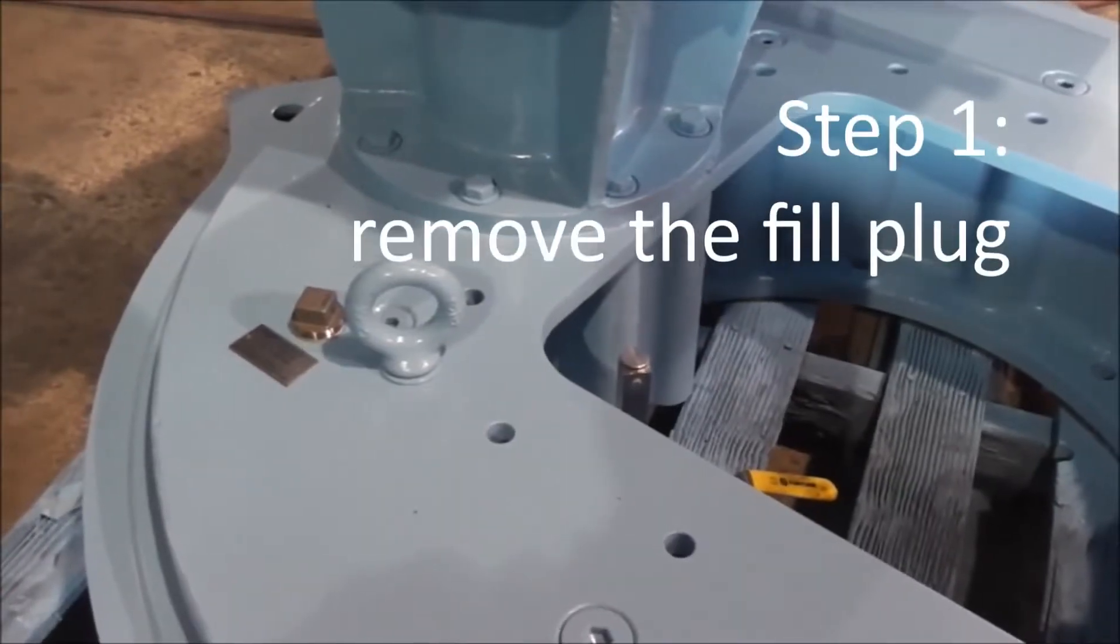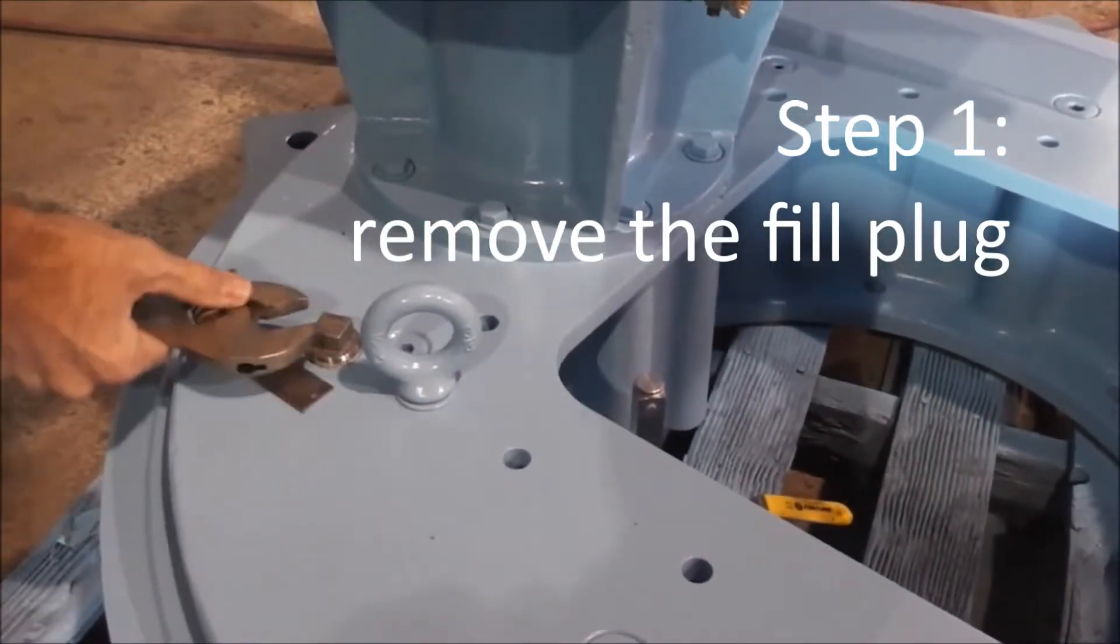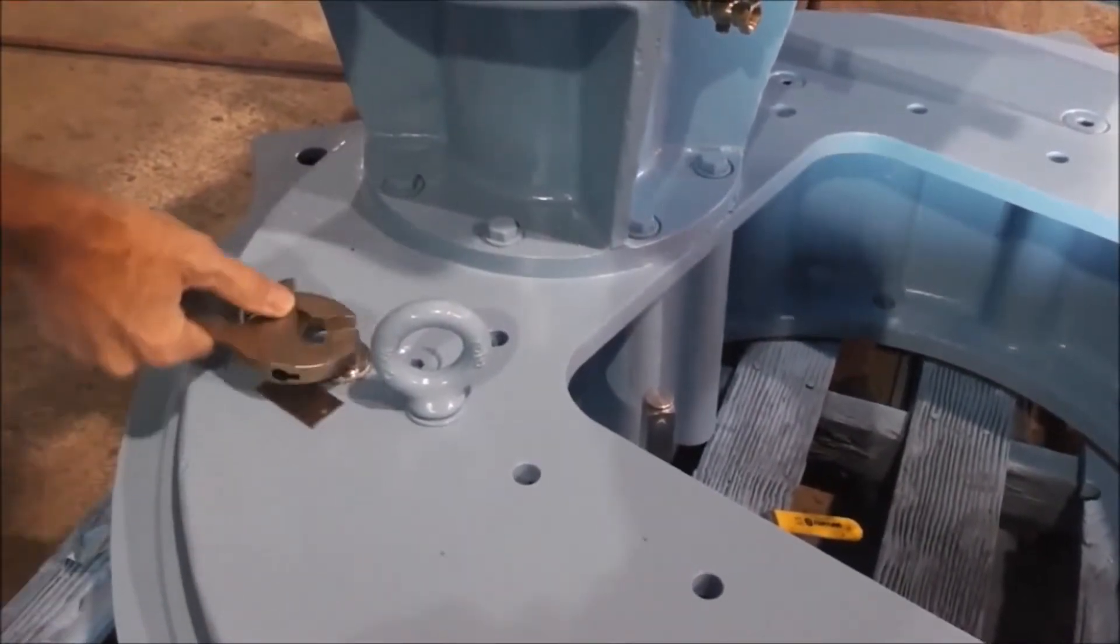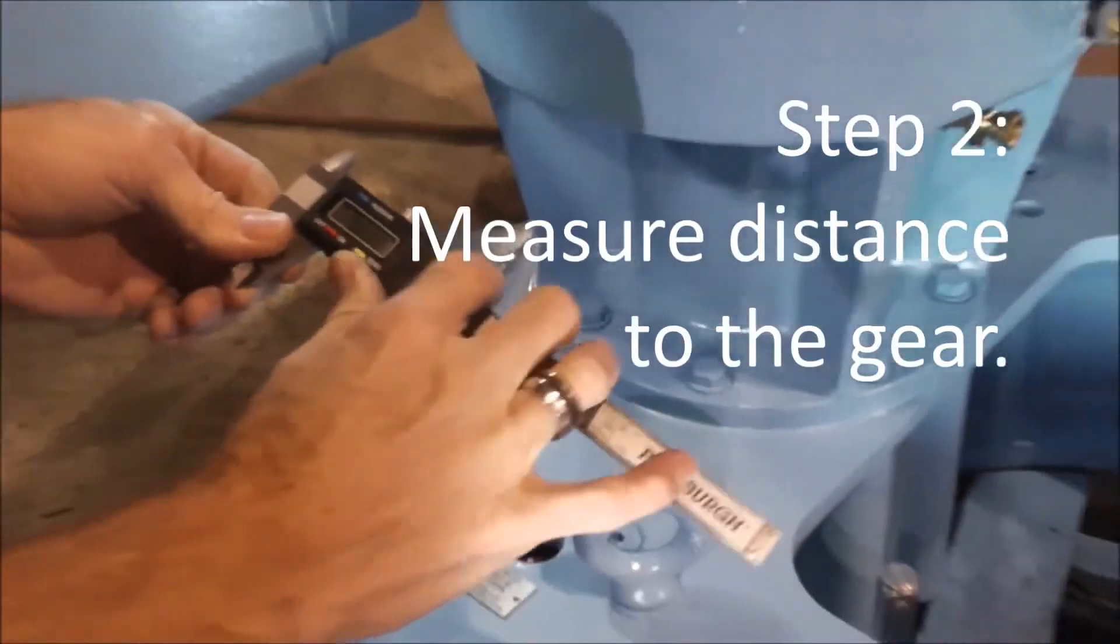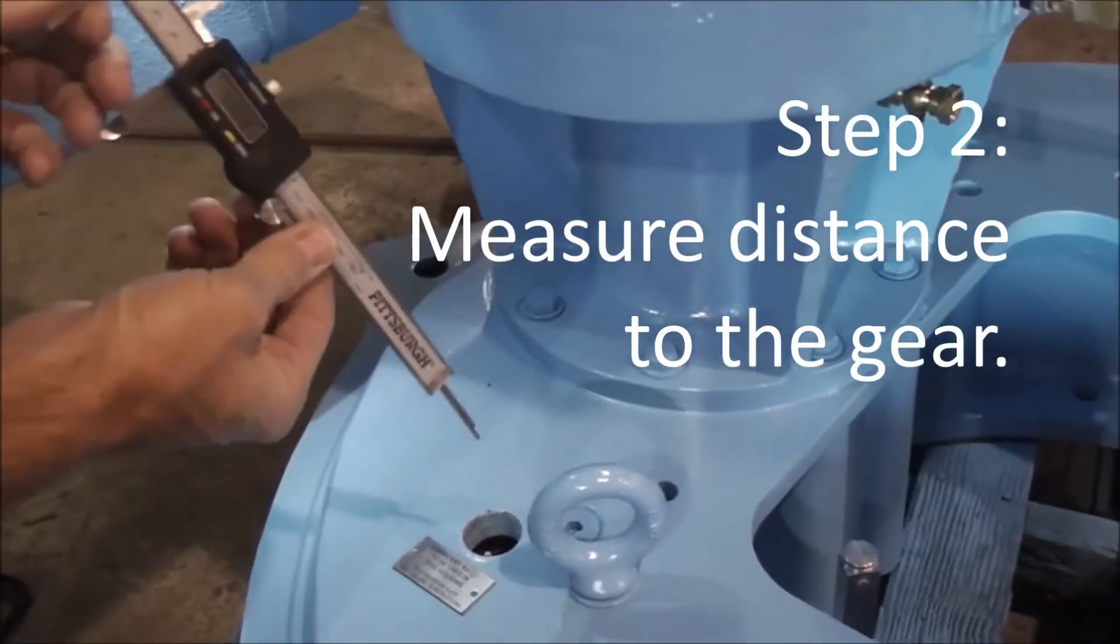The first step is to remove the fill plug from the main cover of the drive. Using calipers, we measure the distance from the top of the main gear cover down to the top of the gear.